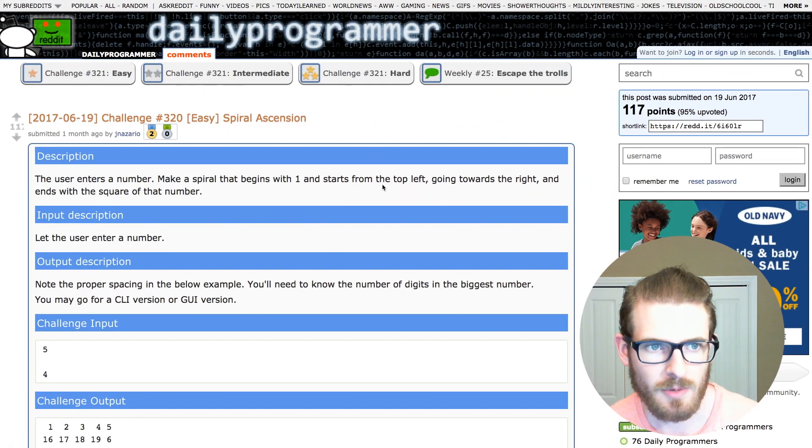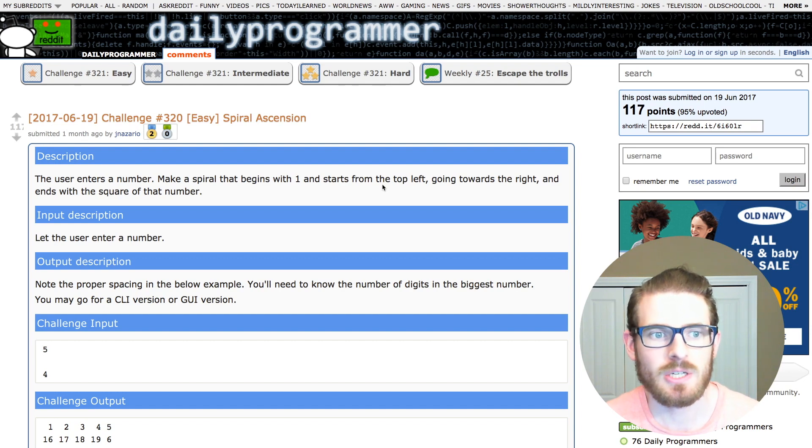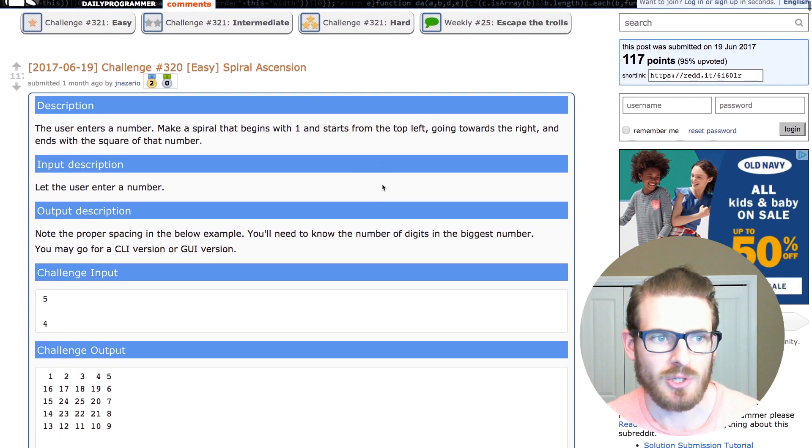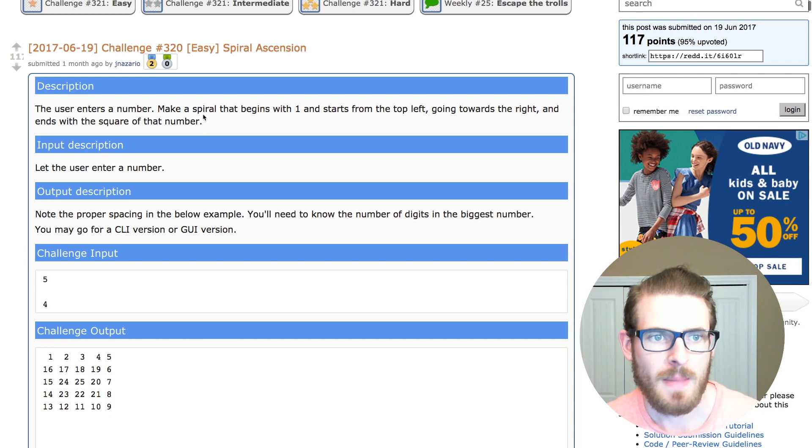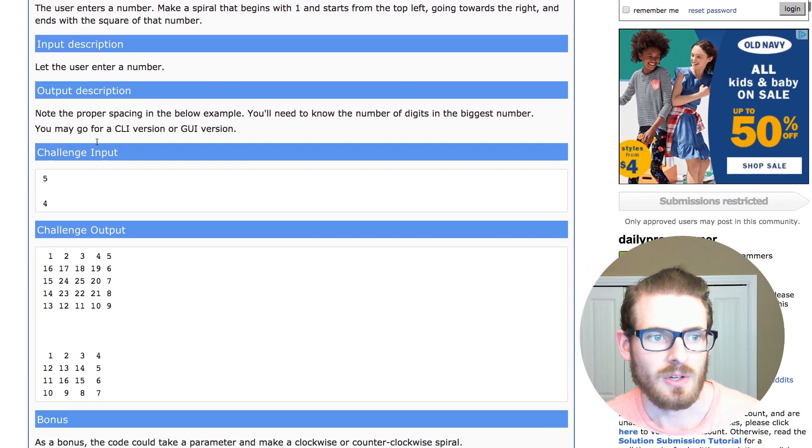All right, so this is the problem that we're going to be solving in this video, it's challenge number three, two, zero. It's called spiral ascension. I'll go ahead and just read it off, it says, the user enters a number, make a spiral that begins with one and starts from the top left, going towards the right, and ends with a square of that number.